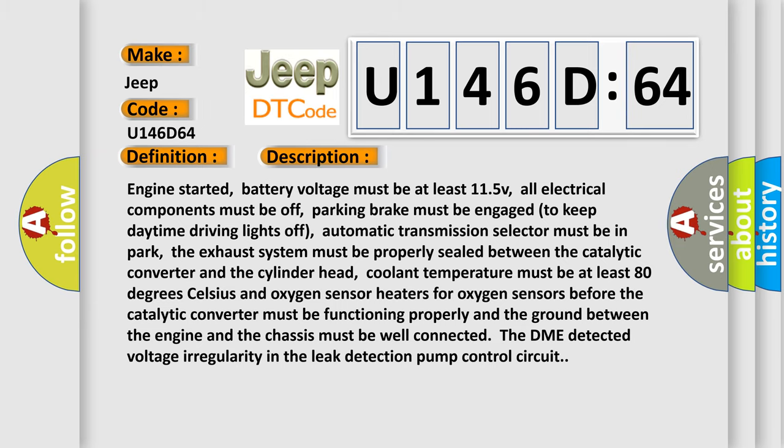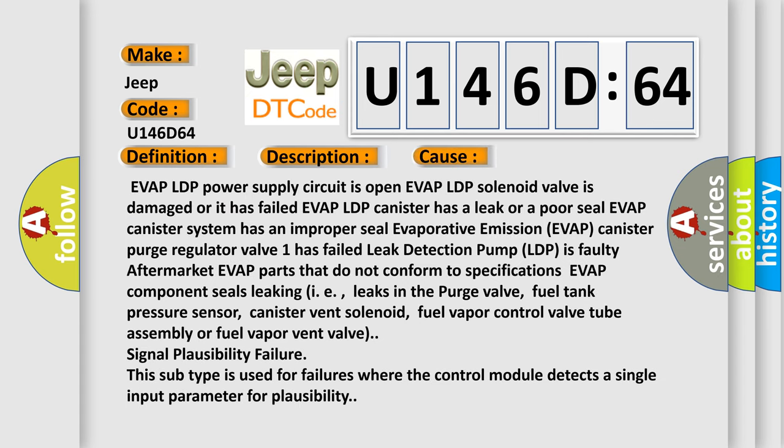This diagnostic error occurs most often in these cases: Evap LDP power supply circuit is open. Evap LDP solenoid valve is damaged or has failed. Evap LDP canister has a leak or a poor seal. Evap canister system has an improper seal for evaporative emission. Evap canister purge regulator valve issue. Evap LDP has failed — leak detection pump. Evap LDP is faulty — aftermarket evap parts that do not conform to specifications. Evap component seals leaking, i.e., leaks in the purge valve, fuel tank pressure sensor, canister vent solenoid, fuel vapor control valve tube assembly, or fuel vapor vent valve signal plausibility failure.